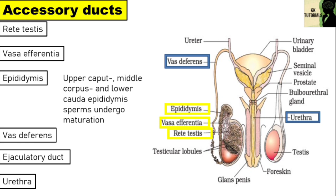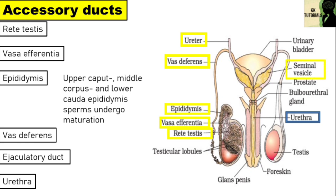Posteriorly, the epididymis leads into the vas deferens, which travels up to the abdominal cavity and loops over the ureter to open into the urethra. Before doing so, it joins the duct of the seminal vesicle to form the ejaculatory duct. The ejaculatory duct passes through the prostate gland and opens into the urethra.